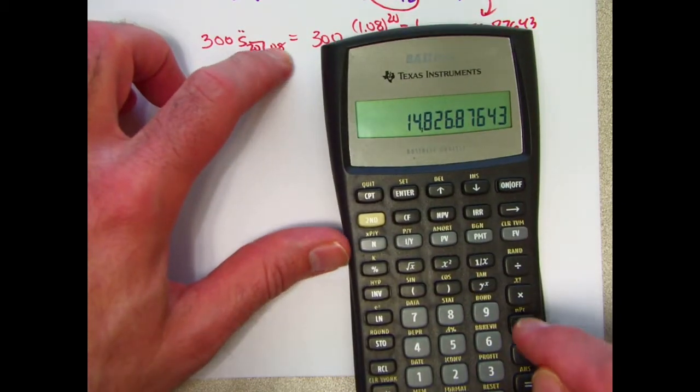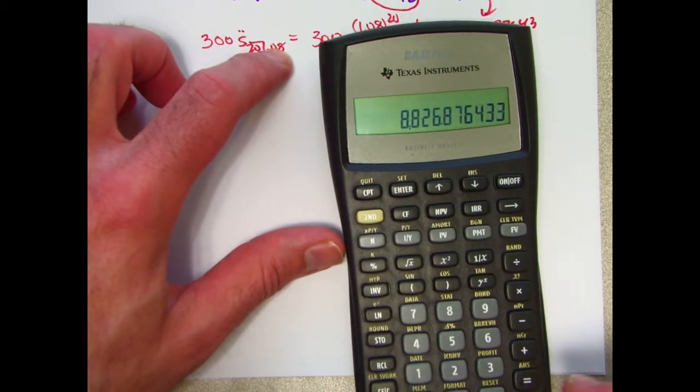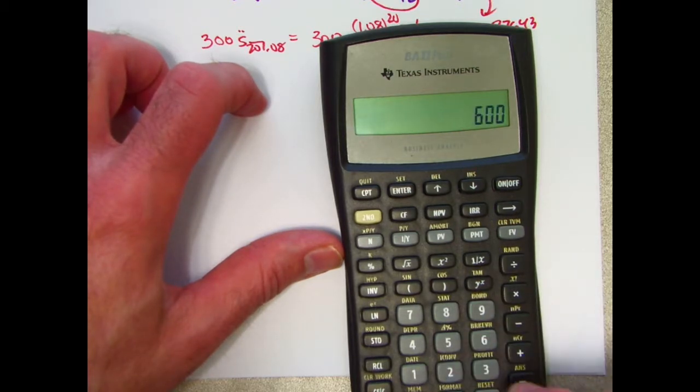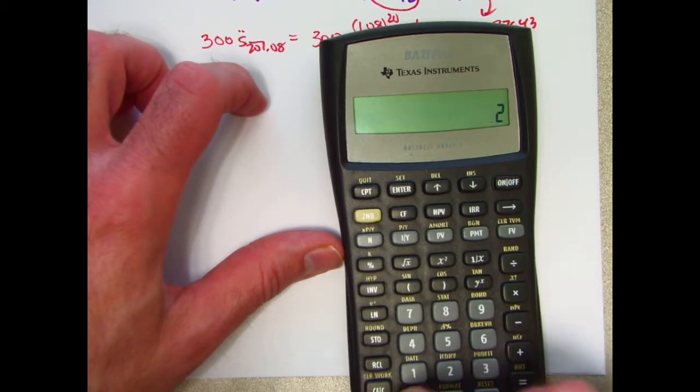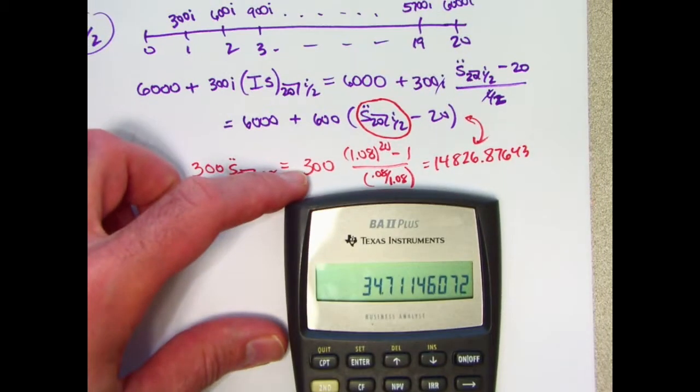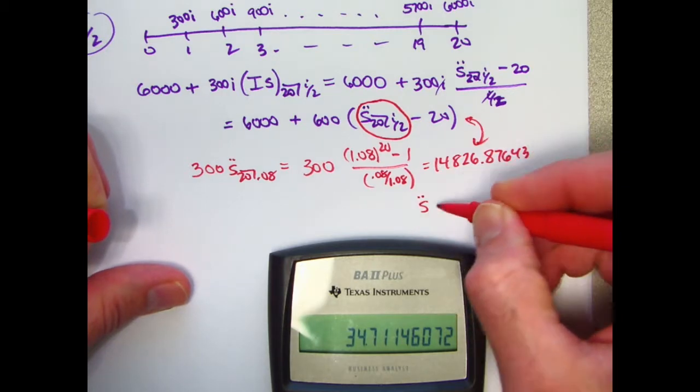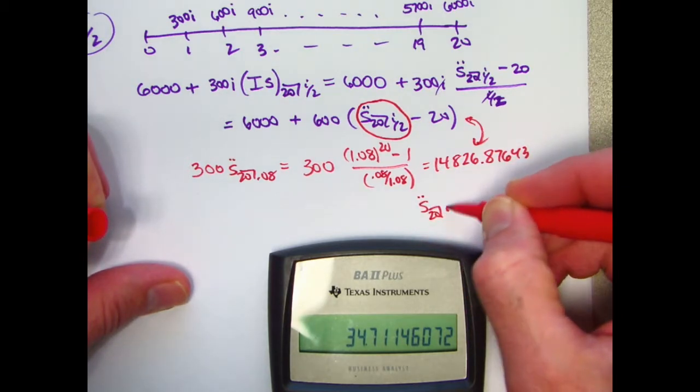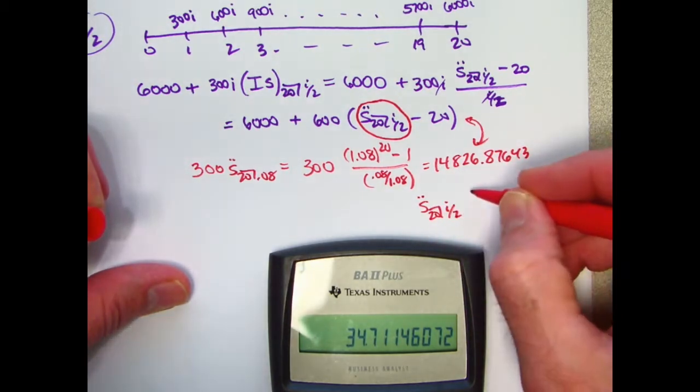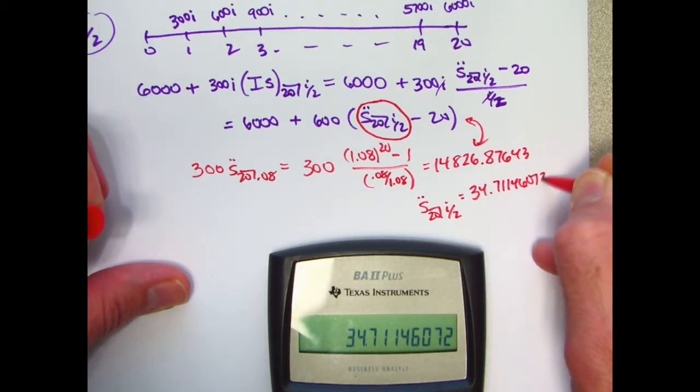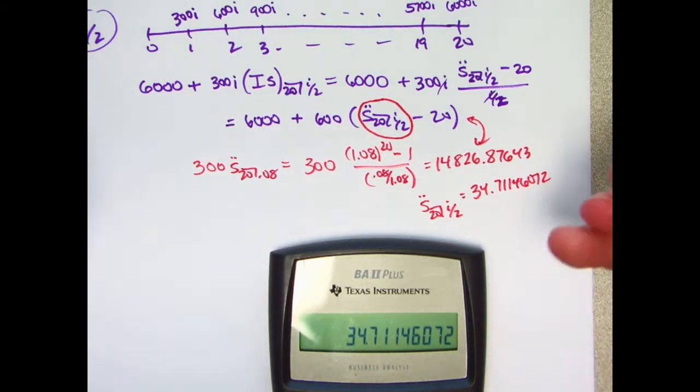First subtract 6,000. Now divide by 600. Now add 20. There we have it. S double dot sub 20 with interest rate i over 2 equals 34.71146072. We now want to solve for i over 2. And once we have i over 2, then we'll have i.